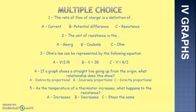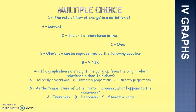Finishing up with some multiple choice questions. Question one: the rate of flow of charge is a definition of current, potential difference, or resistance? It's current. Question two: the unit of resistance — is it the Georg, the Coulomb, or the Ohm? It's the Ohm, named after that scientist. Question three: Ohm's Law is represented by which equation — V equals I over R, V equals IR, or V equals R over I? The correct answer is B, V equals IR. Question four: if a graph shows a straight line going up from the origin, what sort of relationship does this show? Because it comes from the origin and is straight, that's a directly proportional relationship.